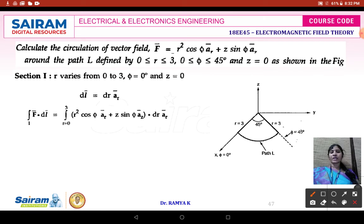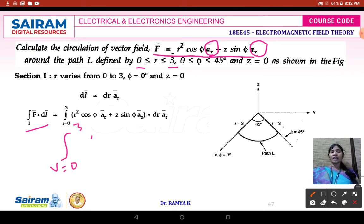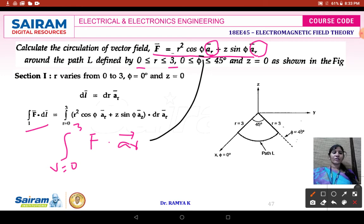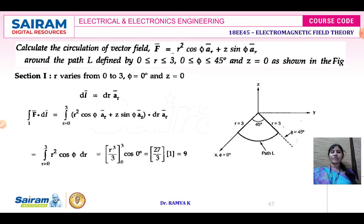The circulation of vector field F is integrated with respect to r, since the field vector is only in the ar direction. The integration is from r equals 0 to 3. Here F vector dot ar vector equals r squared cos phi, as given in the problem. Once substituted, you get the value of the vector field as 9. Therefore, the circulation of vector field F equals r squared cos phi ar plus z sin phi az equals 9 for this path.